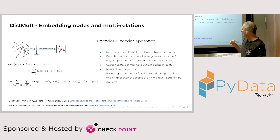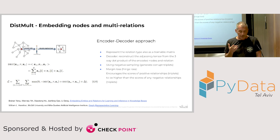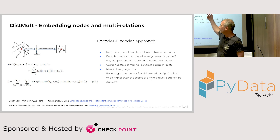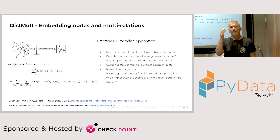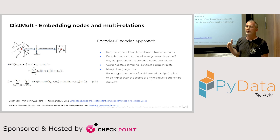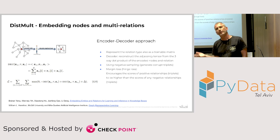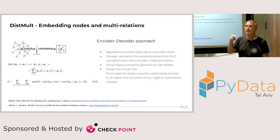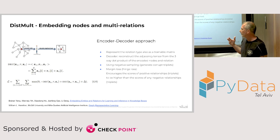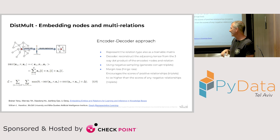The loss function is called margin loss or hinge loss. The idea is that it encourages triplets that really exist in the graph to get a low score. Part of the process is negative sampling — we take existing triplets (source, relation, target nodes) and corrupt them by changing the origin node, the relation type, or the target node. The loss function penalizes these corrupted triplets since they don't exist in the graph. This causes the model to converge and gives us an embedding that maintains the structure we want.